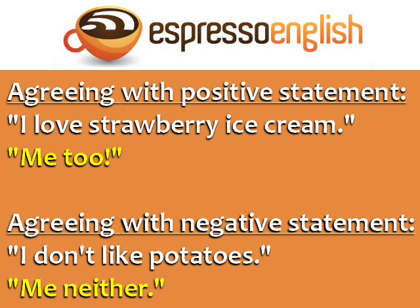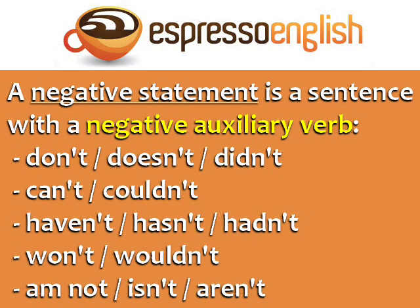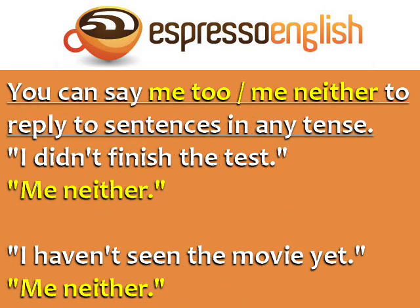If someone says 'I don't like potatoes' and you agree, you can say 'me neither.' A negative statement is a sentence with a negative auxiliary verb: don't, doesn't, didn't, can't, couldn't, haven't, hasn't, hadn't, won't, wouldn't, am not, isn't, or aren't. You can say 'me too' or 'me neither' to reply to sentences in any tense.